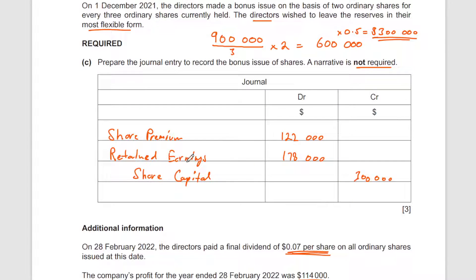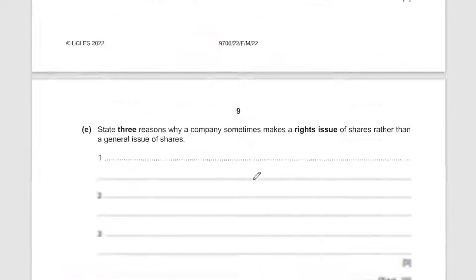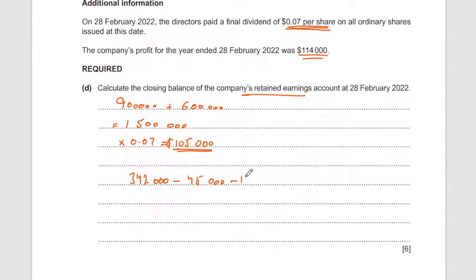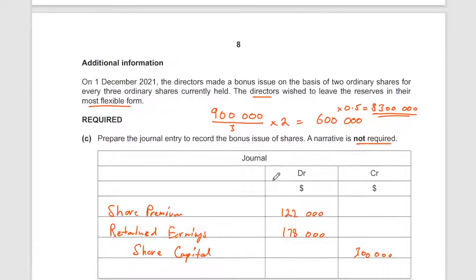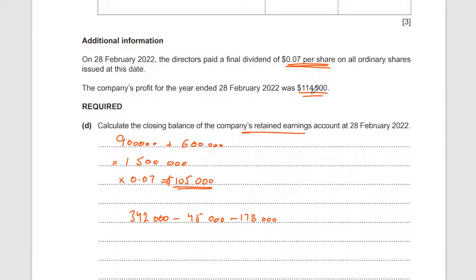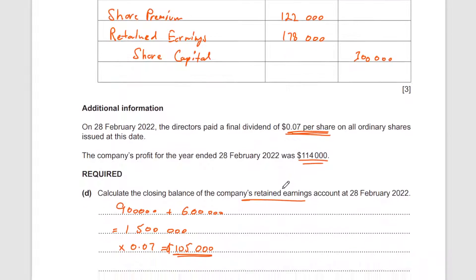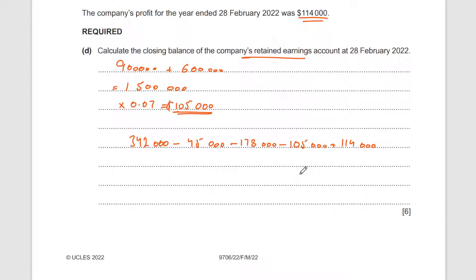Next, we used retained earnings to fund part of the bonus issue — subtract $178,000. Then we subtract the final dividend of $105,000. Some money also came into retained earnings: add $114,000 profit. So: 342,000 − 45,000 − 178,000 − 105,000 + 114,000 = $128,000.